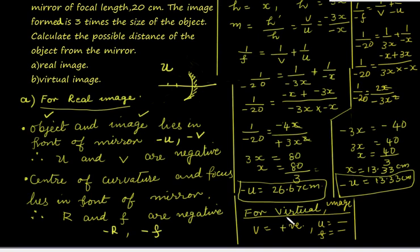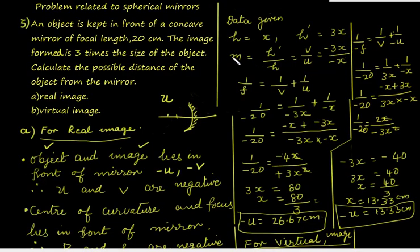Let us move to section (b), that is for virtual image. For virtual image, the image will be behind the mirror, so v becomes positive, while u and f remain negative. The mirror formula becomes 1 over negative 20 equals 1 over positive 3x plus 1 over negative x. On simplification, the numerator becomes negative x plus positive 3x, which is positive 2x, and the denominator becomes positive 3x times negative x, giving negative 3x squared.